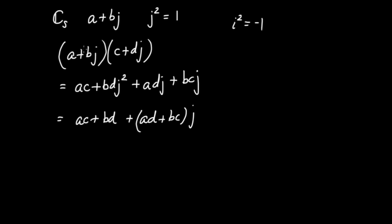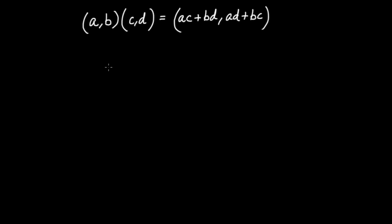If you have a split complex number A plus Bj and you want to add it to C plus Dj, that's just the same as with complex numbers — you add the two real parts together to get A plus C, and your new imaginary part is simply B plus D. So there's nothing new to learn about split complex number addition. Also, whenever we have numbers like A plus Bi or A plus Bj, we can write them as ordered pairs. So instead of A plus Bj, I can write (A, B), and the multiplication rule we derived can be expressed in ordered pair form.